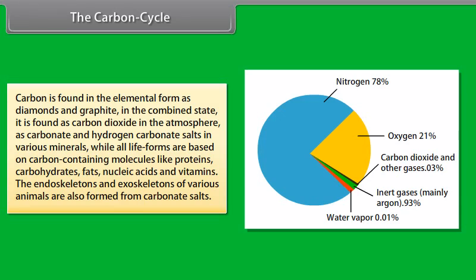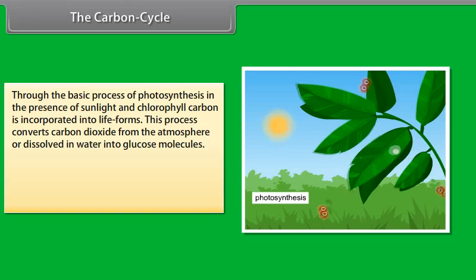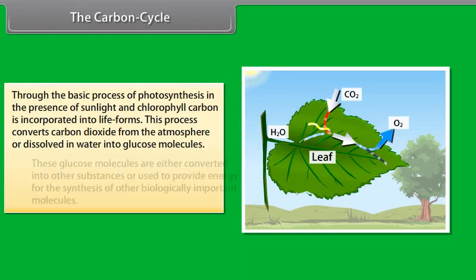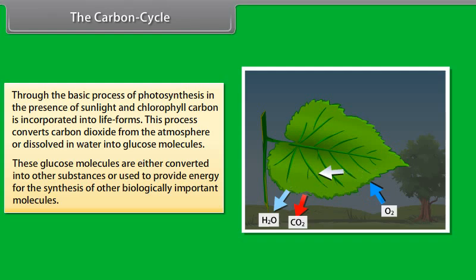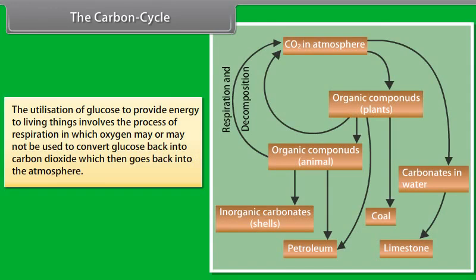The Carbon Cycle. Carbon is found in the Elemental form as Diamonds and Graphite, in the combined state it is found as Carbon Dioxide in the atmosphere as Carbonate and Hydrogen Carbonate salts in various minerals, while all life forms are based on Carbon containing molecules like proteins, carbohydrates, fats, nucleic acids and Vitamins. The Endoskeletons and Exoskeletons of various animals are also formed from Carbonate salts. Through the basic process of Photosynthesis in the presence of Sunlight and Chlorophyll, Carbon is incorporated into life forms. This process converts Carbon Dioxide from the atmosphere or dissolved in water into glucose molecules. These glucose molecules are either converted into other substances or used to provide energy for the synthesis of other biologically important molecules.